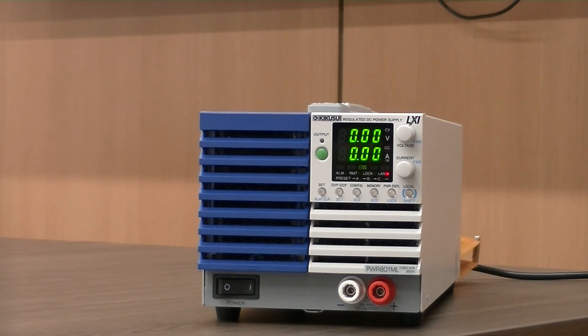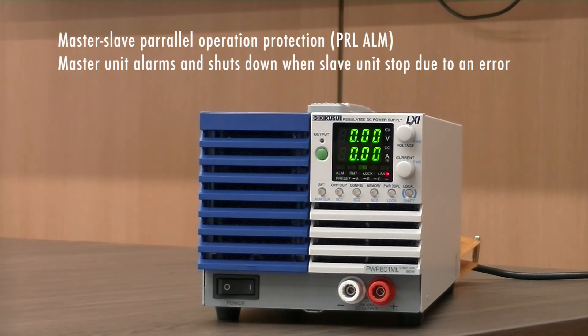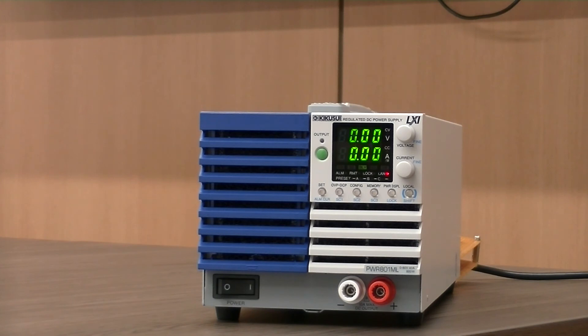Last, but definitely not least, is the master-slave parallel operation protection. If a slave unit stops due to an error during master-slave parallel operation, the master unit detects the alarm and shuts down the output of the entire system. This function protects devices by preventing the master unit and the remaining slave units from continuing output.